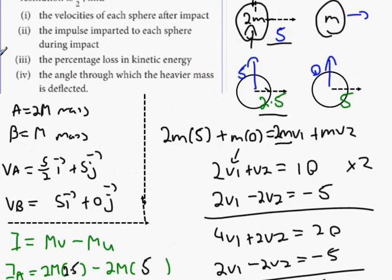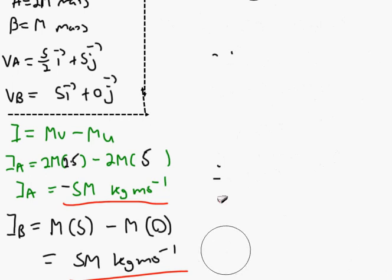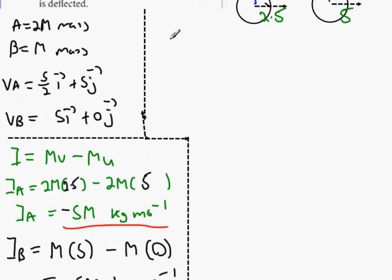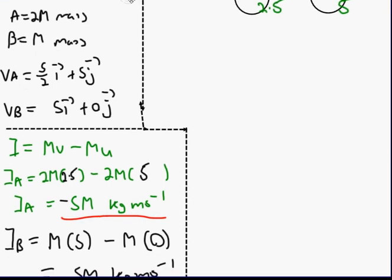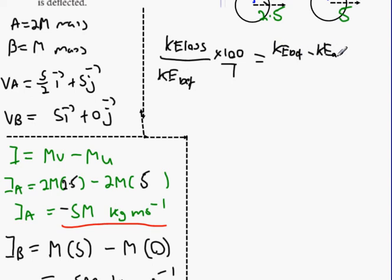Now the percentage loss in kinetic energy. Percentage loss in kinetic energy - how are we going to go about doing that? If you really want to start off with the complete equation, you're going to say KE loss divided by KE before, multiply by 100 over 1. That's the same thing as KE before minus KE after, all over KE before, multiply by 100 over 1. So you know your process, it's just a matter of actually doing it.